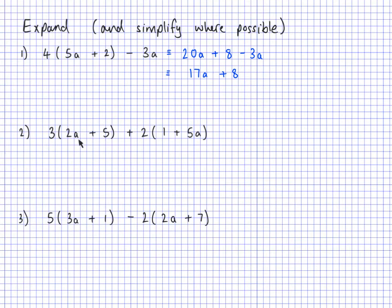Here I've got two brackets to expand and then put together. The first one: 3 times 2a is 6a, and 3 times 5 is 15. Then treating the second bracket as positive 2: positive 2 times 1 is positive 2, and positive 2 times 5a is positive 10a. Now collecting like terms: 6a and 10a make 16a, and 15 and 2 together make 17.